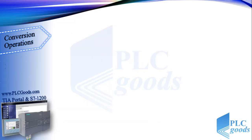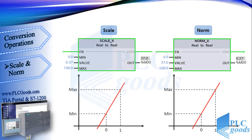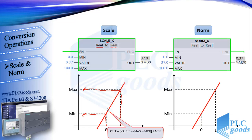The Scale and Norm instructions are used to change a specified range with a linear relationship. First we must determine the input and output data types. These instructions have three inputs. By the Scale instruction, 0 goes to the minimum value and 1 goes to the maximum value. With two points we can write a mathematical function to represent the linear relationship.